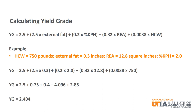Also, by looking at the addition and subtraction signs, you can tell how each factor affects yield grade. For external fat, percent KPH, and hot carcass weight, there is an addition sign. That tells you that the higher each of those values, the higher the yield grade will be. There is a subtraction sign for rib eye area. That tells you that the higher the rib eye area, the lower the yield grade will be, because you would be subtracting a higher number.